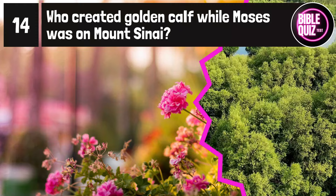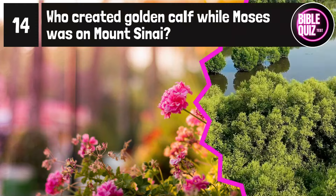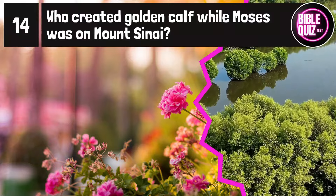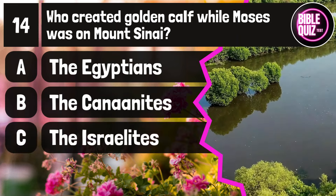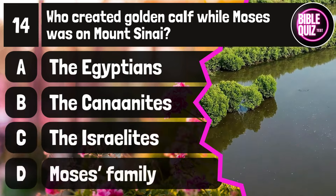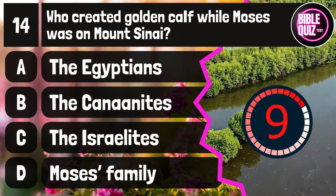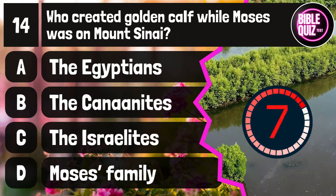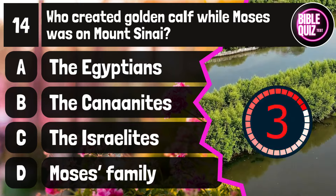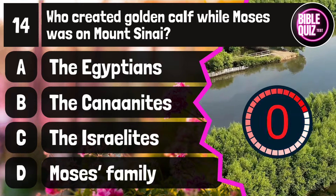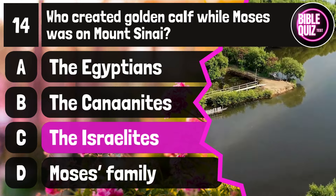Question number 14. Who created the golden calf while Moses was on Mount Sinai? Option A: The Egyptians. Option B: The Canaanites. Option C: The Israelites. Option D: Moses' family. Time to think. The answer is option C: The Israelites.